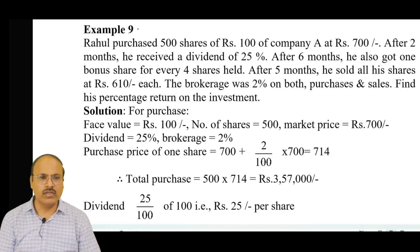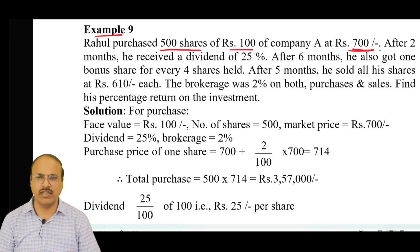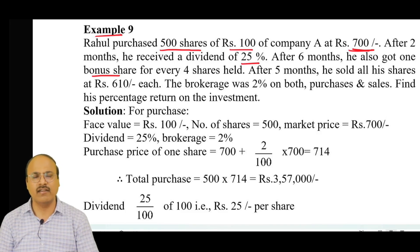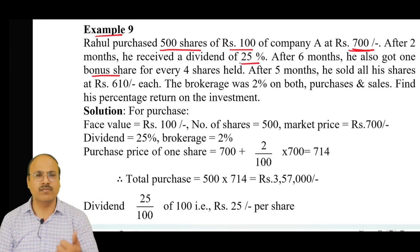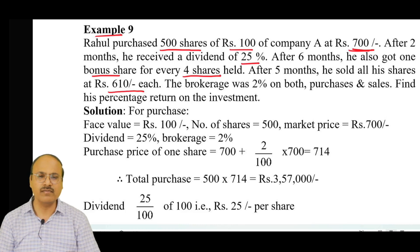Let us see another example from the study material. Rahul purchased 500 shares of rupees 100 face value of Company A at rupees 700 per share. After two months, he received a dividend of 25%. After six months, he also got one bonus share for every four shares. After five months, he sold all his shares at rupees 610. The brokerage paid was 2% on both the purchase and the sale.